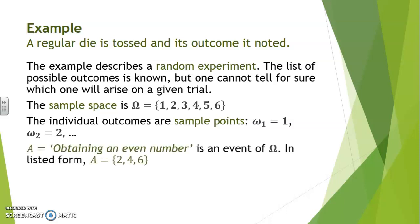A, obtaining an even number, is an event of omega. In listed form we would say that A is formed of the outcomes two, four, and six. So as you can see it's a subset of omega and is formed of sample points.